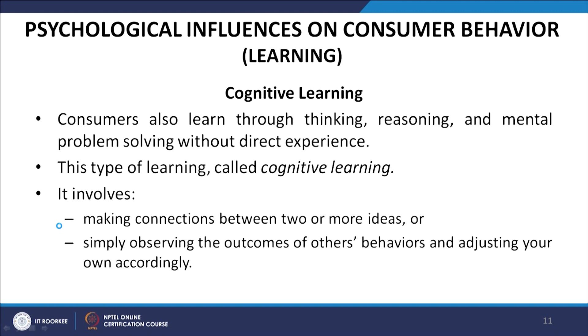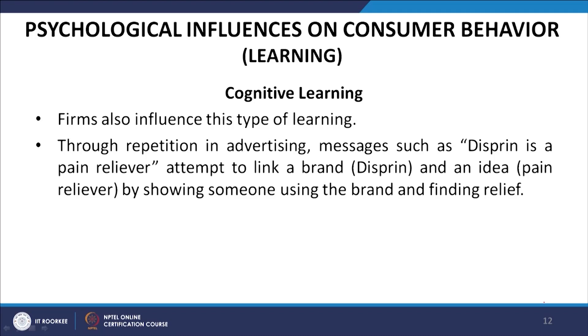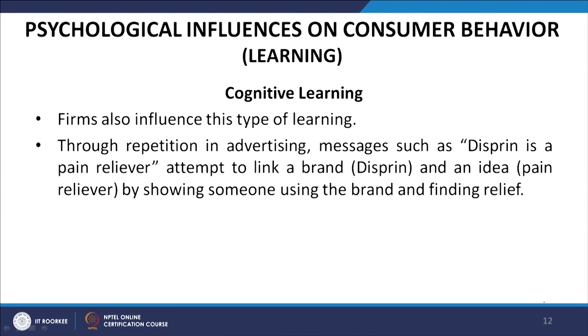Consumers also learn through thinking, reasoning, and mental problem solving without direct experience. This type of learning is called cognitive learning and it involves making connections between two or more ideas, or simply observing the outcomes of others' behavior and adjusting your own accordingly. Firms influence this through repetition in advertising — such as Desperin being promoted as a pain reliever by showing someone using the brand and finding relief.